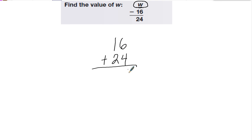So 6 plus 4 is 10, carry the 1. 1 plus 1 is 2, plus 2 is 4. So my answer is 40. Now I can check by doing 40 minus 16 to see if I get 24. So I borrow, 10 minus 6 is 4, 3 minus 1 is 2. So my answer is correct.